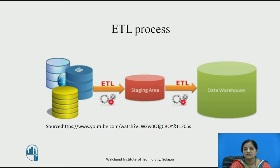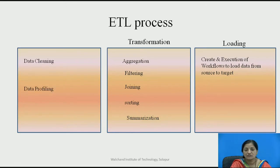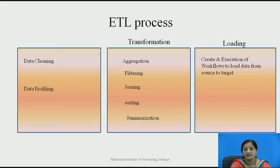This is the ETL process diagram. On the first part, there are multiple information sources. The data is extracted from these sources by ETL and stored into the staging area. From the staging area, it goes through multiple transformation processes and is then stored in the Data Warehouse. In the extraction part, data cleaning and data profiling are done. In the transformation part, aggregated data can be generated, data can be in filtered form, joins are performed, data is sorted or summarized. Then the data is ready for analysis.